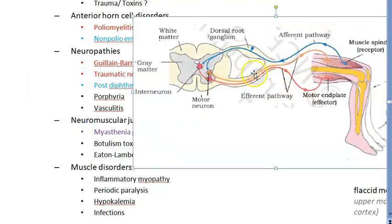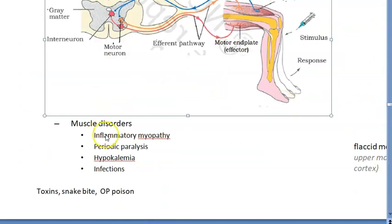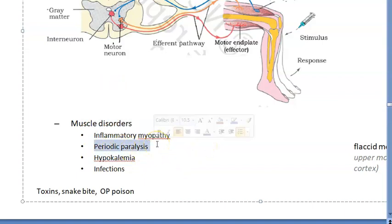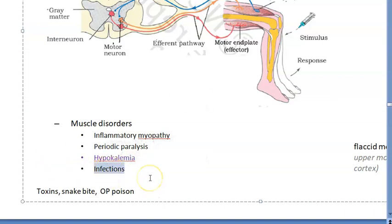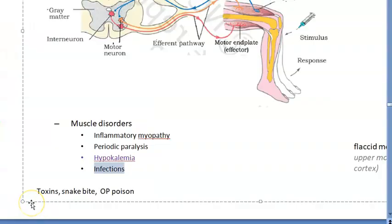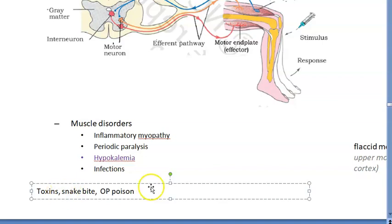Now we have reached the muscle itself. At the muscle level: inflammatory myopathy — such as dermatomyositis — can occur due to malignancy or autoimmune conditions, causing inflamed muscles. Periodic paralysis also occurs at this level. A very important cause is hypokalemia — low potassium — where the muscle fails to contract and becomes flaccid. Infections, toxins, and trauma should also be listed here.